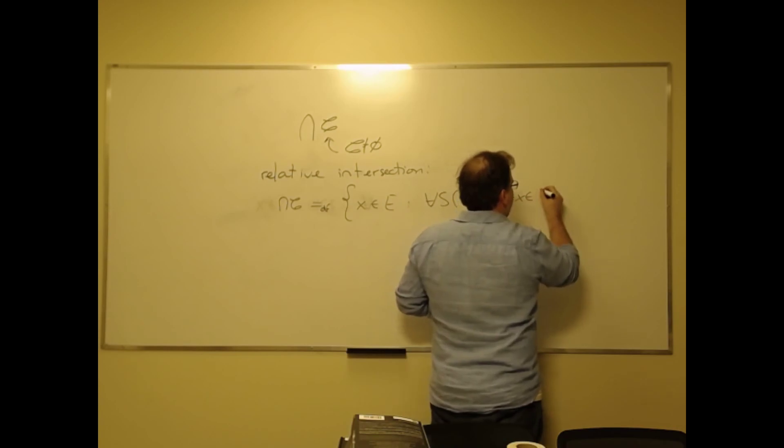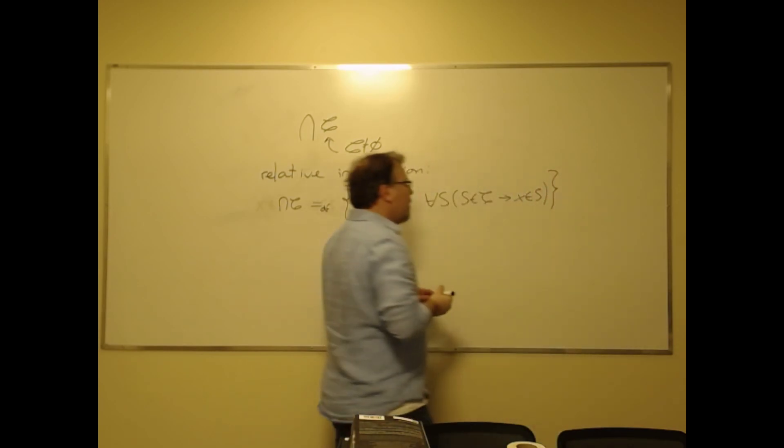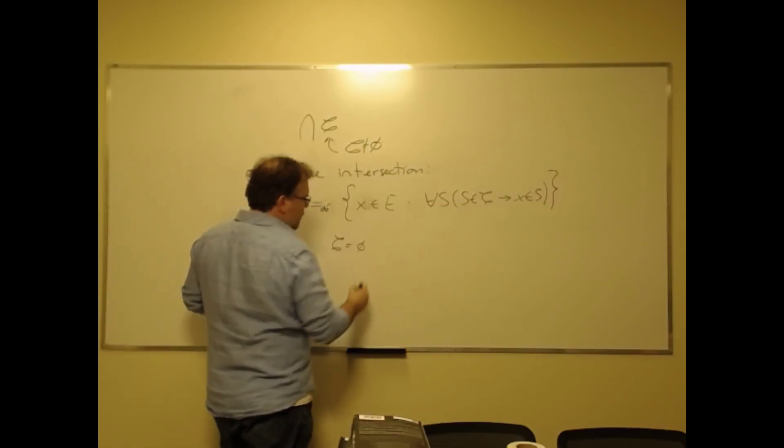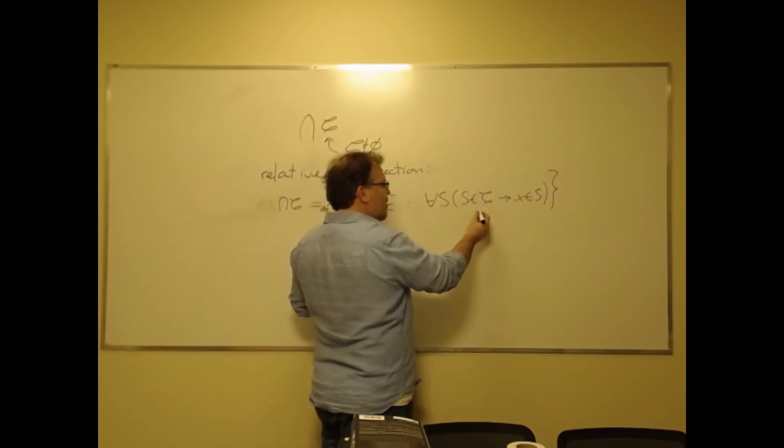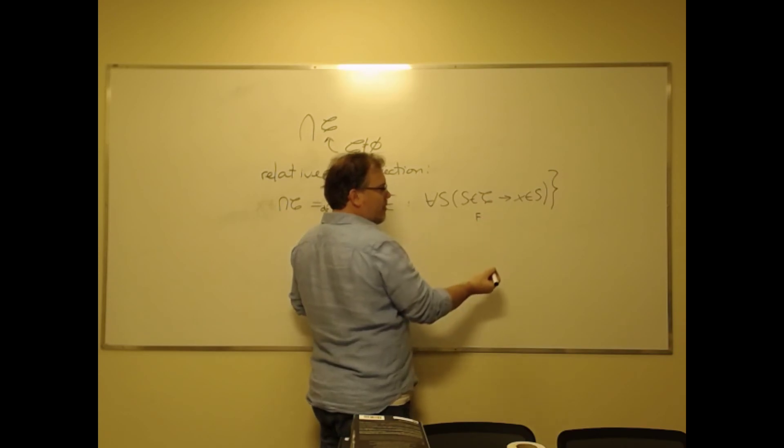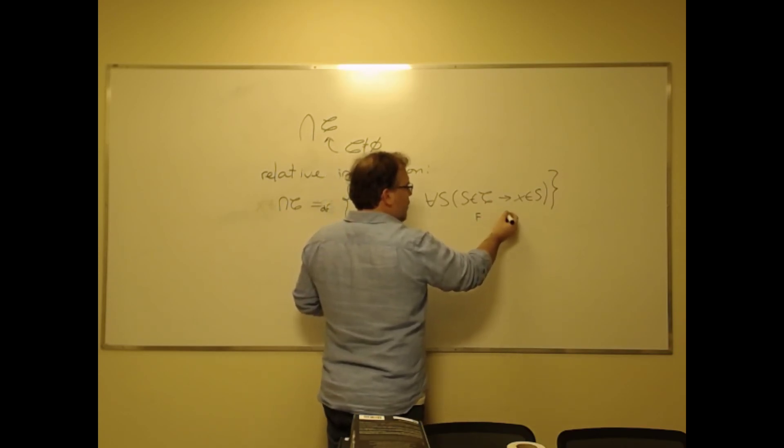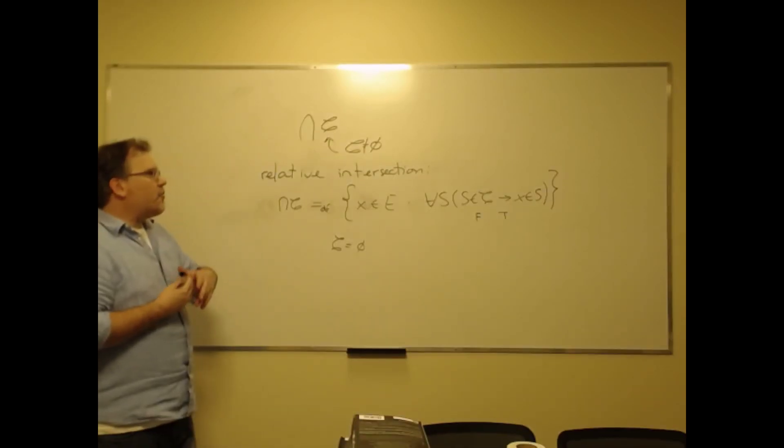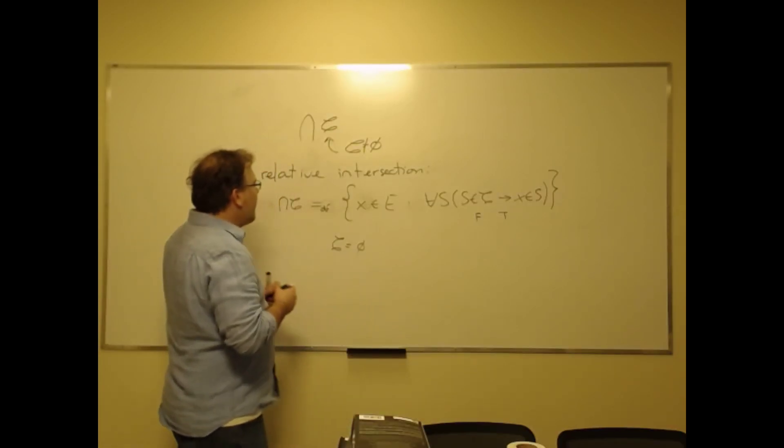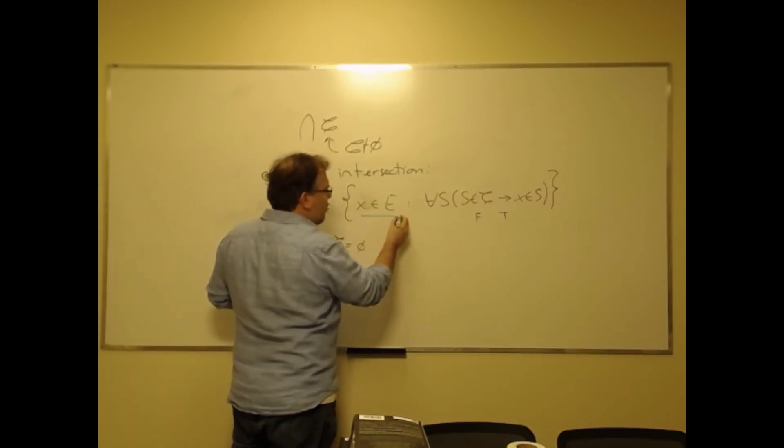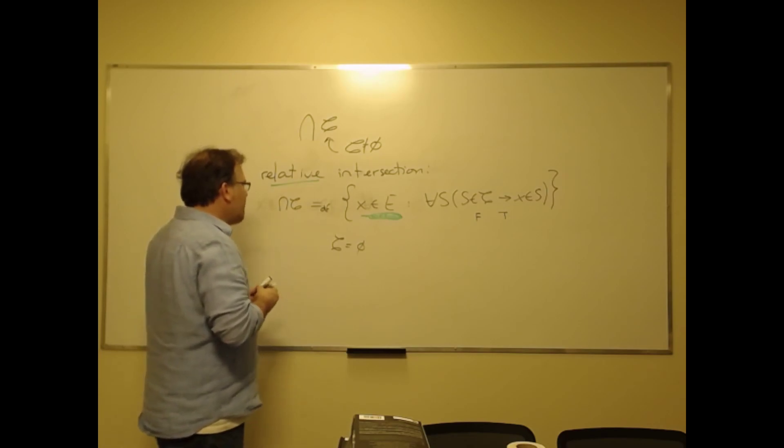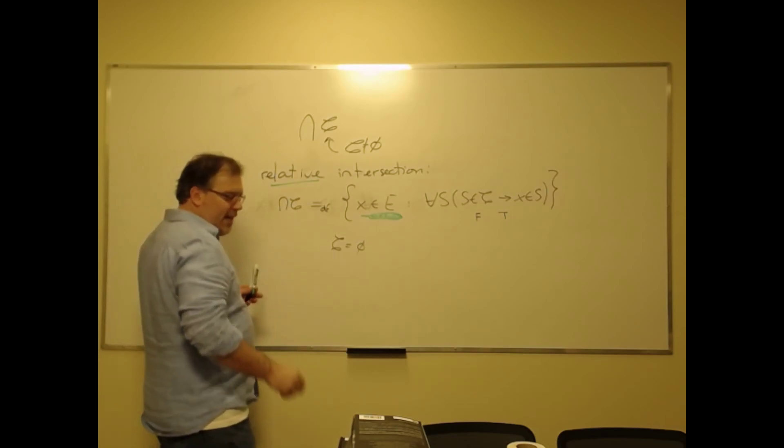Now here, if the collection happens to be the empty set, as we saw, that's going to guarantee that the antecedent of that membership condition is always false, so that the conditional is always true. That would suggest that everything is in the intersection. But now here, since it's a relative intersection that we got from this particular application of the separation principle, all that would tell us is the following.